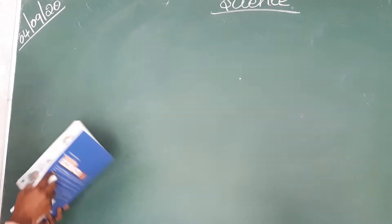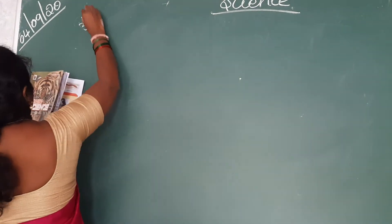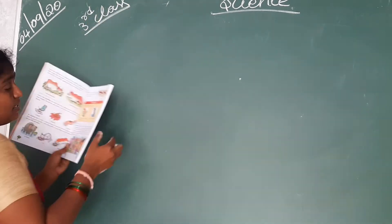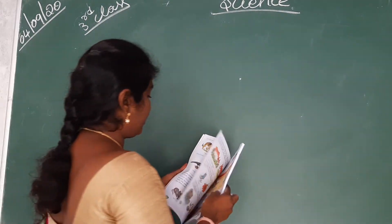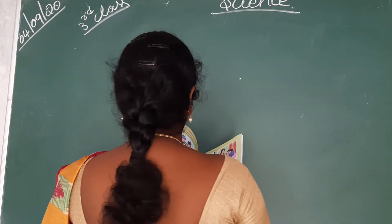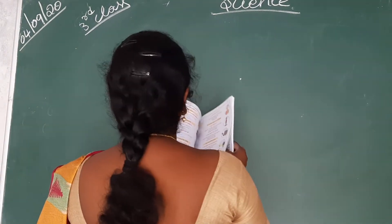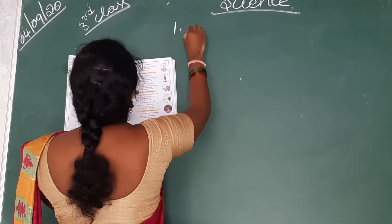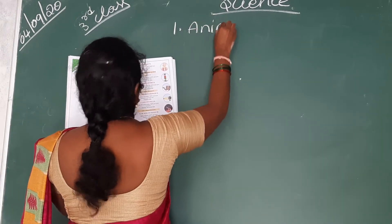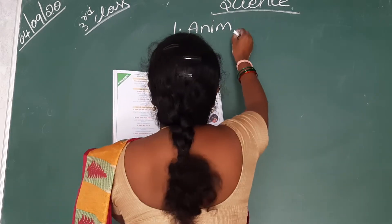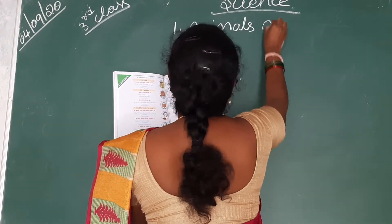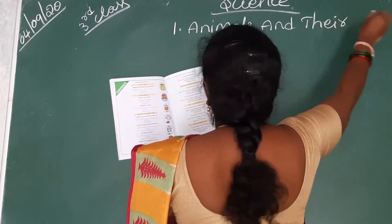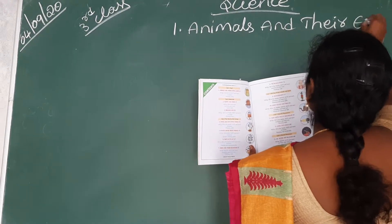Good morning children. Today we have third class science. This is the first lesson, and in previous classes I already explained some of the lesson — half of it is completed. Now I am going to explain the remaining part of the lesson. The lesson name is 'Animals and Their Eating Habits.'